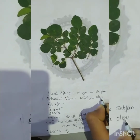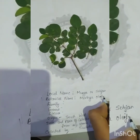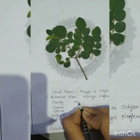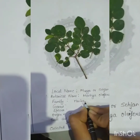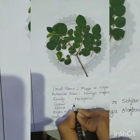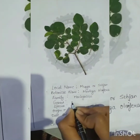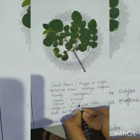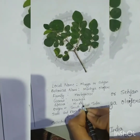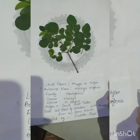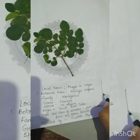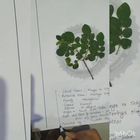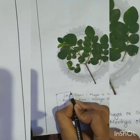The botanical name is Moringa oleifera as mentioned above. It belongs to the family Moringaceae. The genus is Moringa and the species is M. oleifera. That was all about the drumstick.